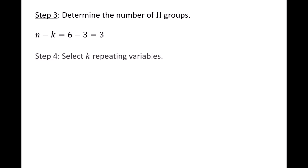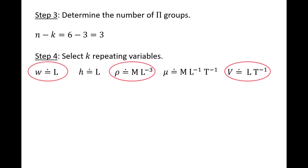Next, we select our repeating variables from among the five independent variables, and we'll need three repeating variables since k is 3. We list the independent variables and their dimensions in the MLT system. There are a few combinations of these variables that would make a valid set of repeating variables. We just have to ensure that all of the basic dimensions are included in the set of variables and that you cannot make a dimensionless group from those variables. For example, width w, density rho, and speed v are a valid set of repeating variables. There are other valid sets as well, such as w, mu, and v.